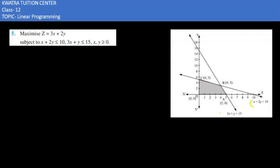Here, our first equation is x + 2y = 10, and this is our second equation. We can see the feasible region, which is the shaded area on the graph.